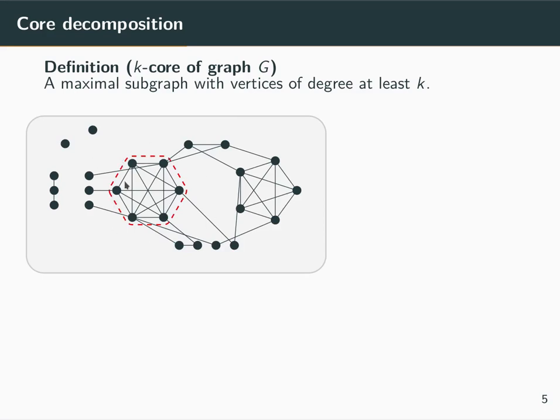In this case, consider for example these highlighted vertices, which all have at least four other edges to vertices of the same subgraph. If we also ensure that this is maximal, taking the other vertices with the same property, we have by definition the four-core of the graph.